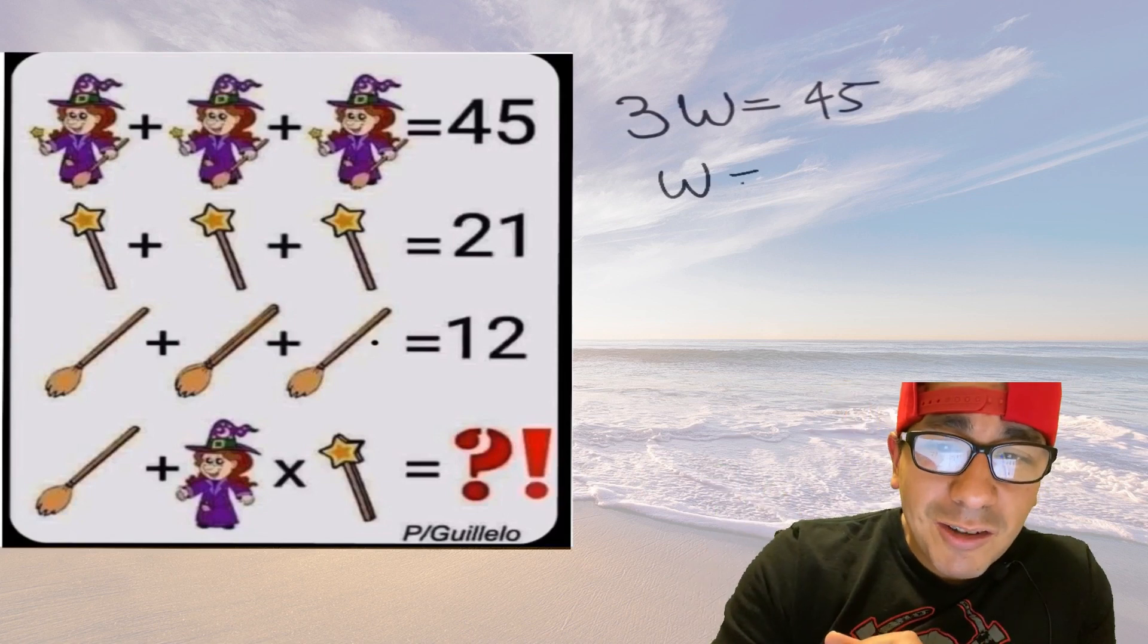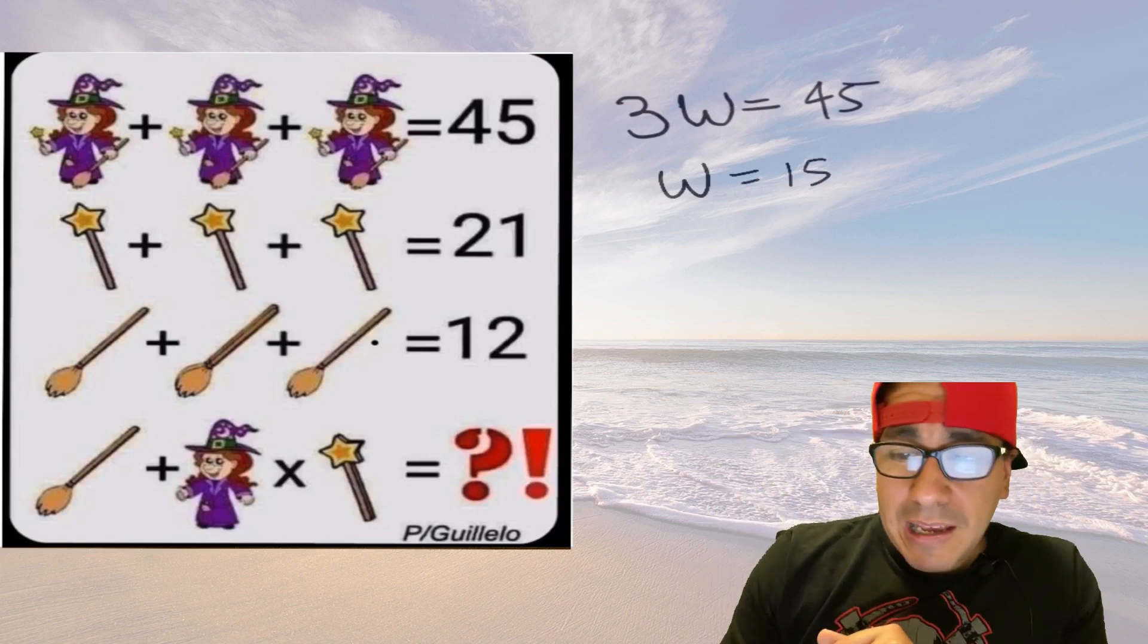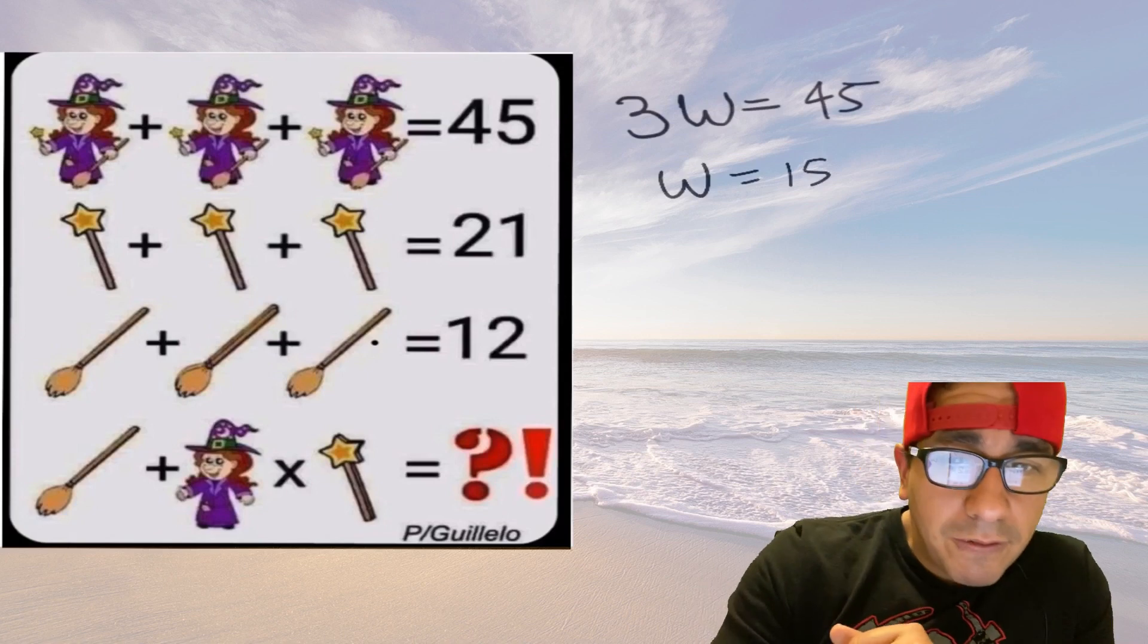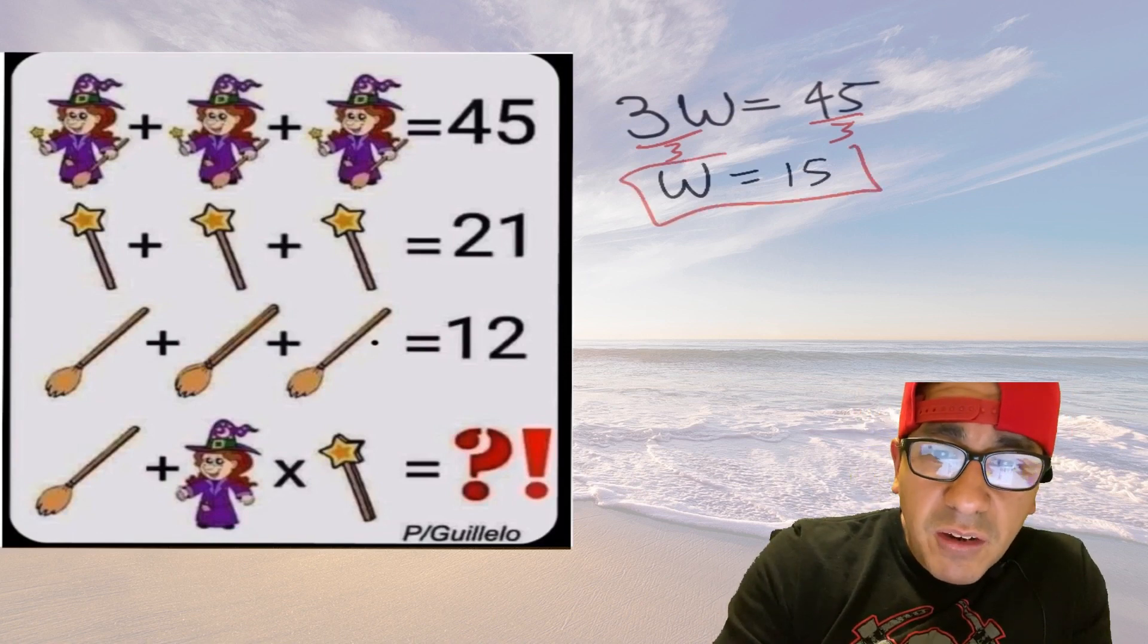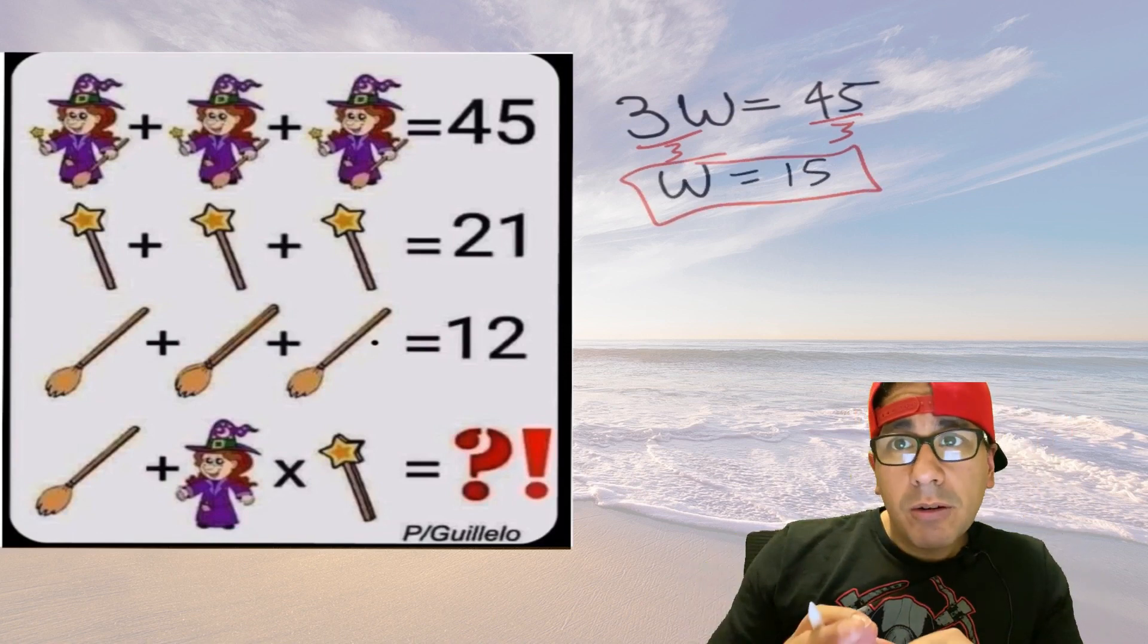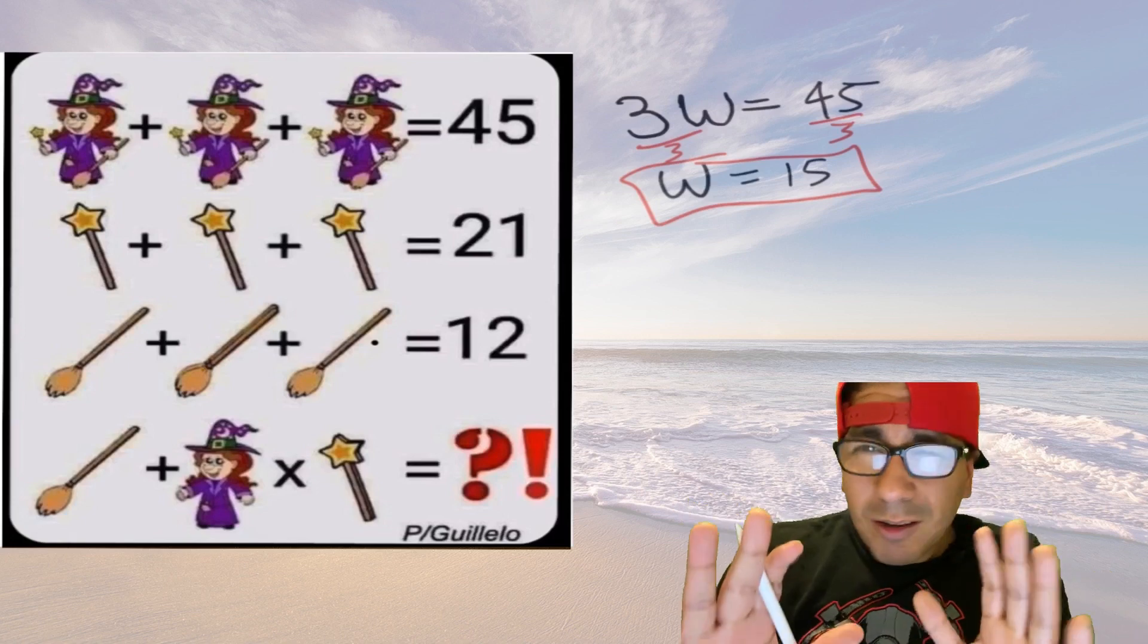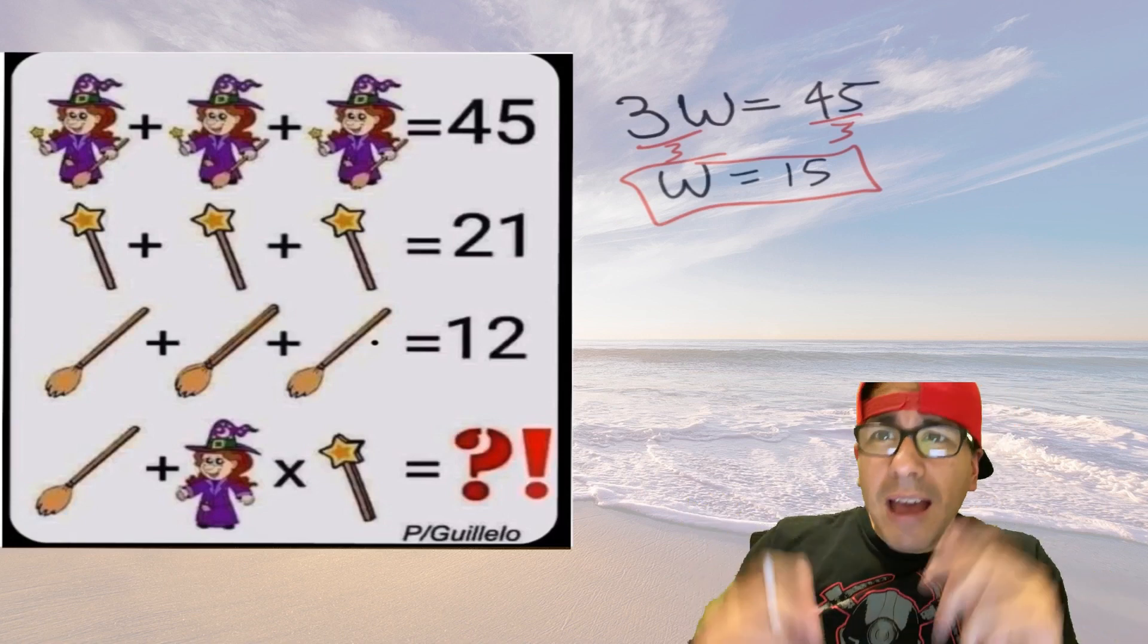So that's 15, and if you want to get fancy you can divide both sides by three, that's how you do that algebraically. So each witch is 15. I know some of you are saying wait a minute, but hold on, I'm looking at this without my glasses so be patient, it's coming.